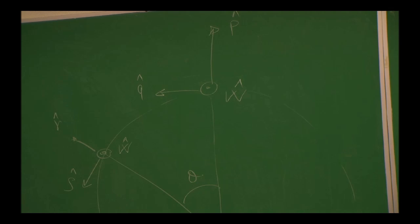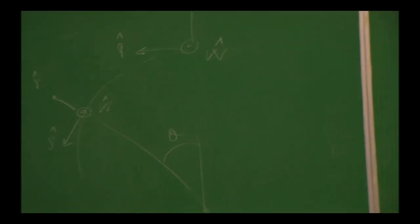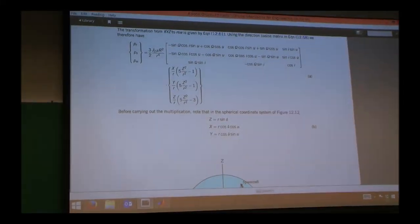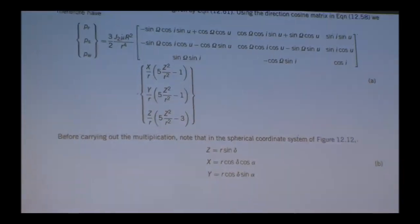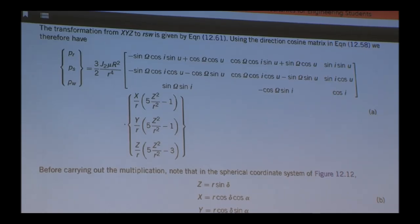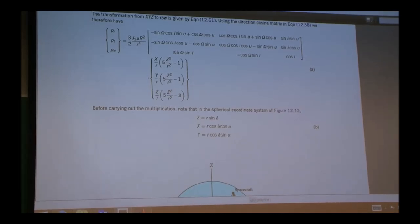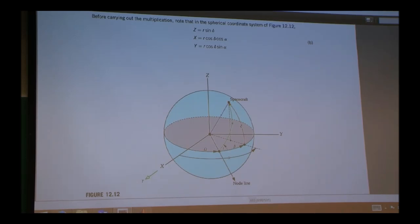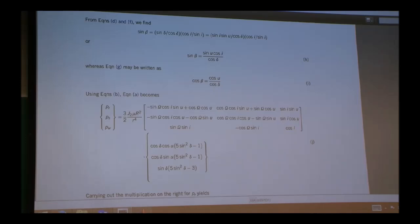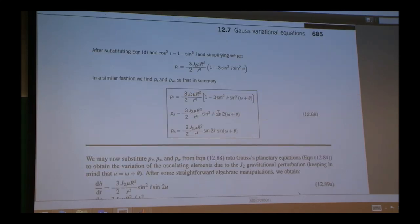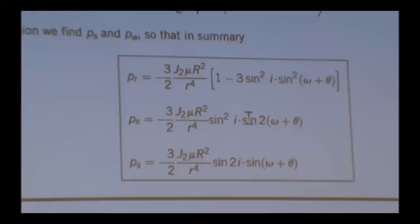Going back to that large matrix — it brings the vector that is in ECI into LVLH. All the angles are there: U contains theta and little omega, big omega is there, inclination is there. From that point on, you use spherical trigonometry. The bottom line is that you use this projection, transform X, Y, Z into spherical coordinates, and in the end these boxed expressions are how the perturbation due to J2 projects in the radial direction, tangential direction, and W direction.